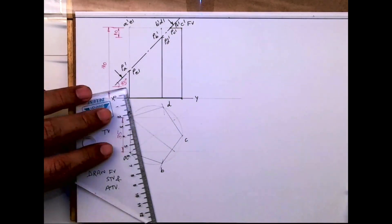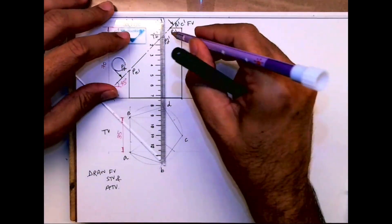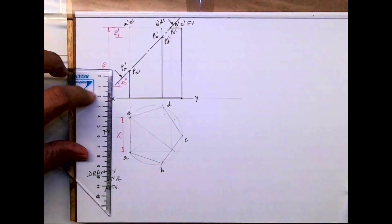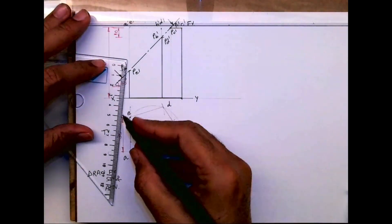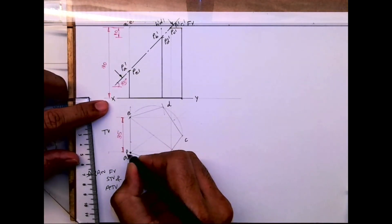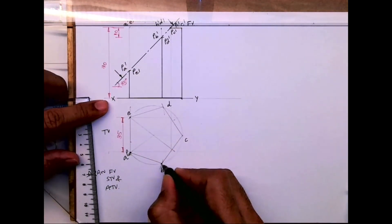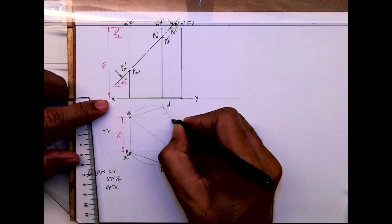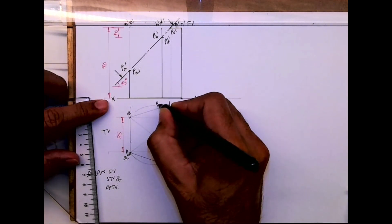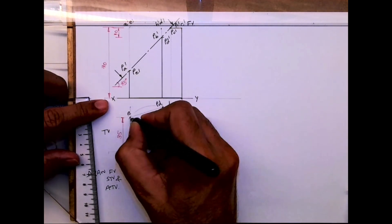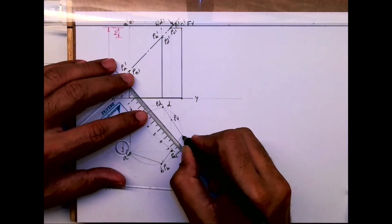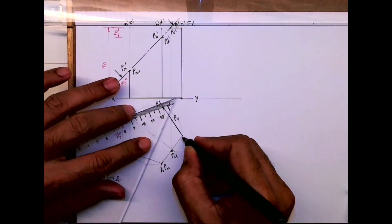Whenever you cut the top surface, you get two points that you need to project. On A you will get PA, on B you will get PB, here PU, here PV, PD, and PE. I will draw the remaining object dark.